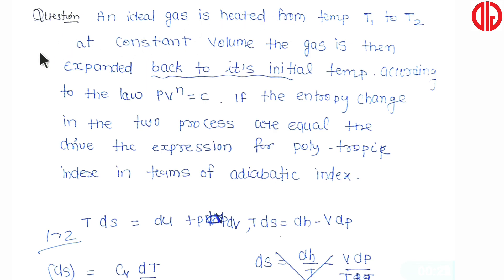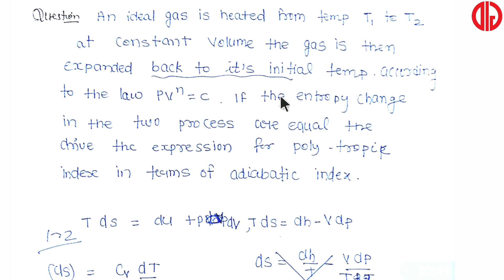An ideal gas is heated from temperature T1 to T2 at constant volume — we have heated the gas at constant volume from T1 to T2. Then we have expanded back to its initial temperature. After expansion we have achieved the same initial temperature again. During expansion we are following the law pv raised to power n equals to constant.